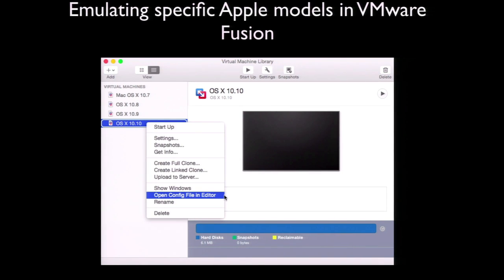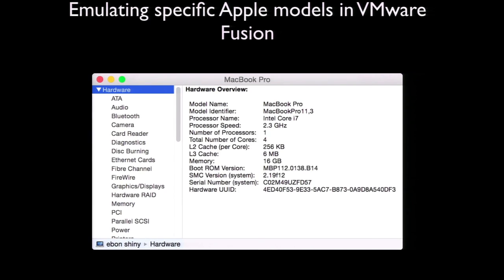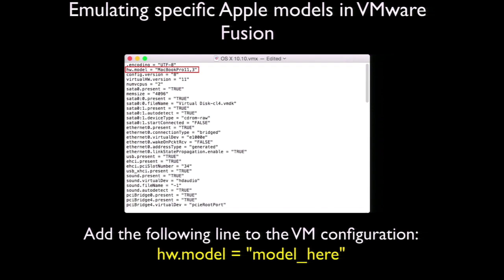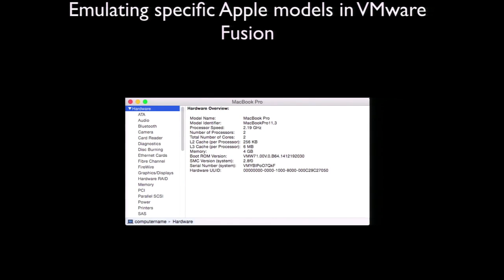Once you have a VM built, you may want to edit it to emulate a specific Mac model — for example, to test model-specific updates from Apple Software Update. The first step is to locate the model identifier of the Mac you want to emulate, which you can find in System Profiler on an appropriate Mac. To set your VM to report itself as a specific Mac model, you'll need to add the hardware model settings to your VM's configuration file. Select the VM, make sure it's not running, hold down the Option key, right-click on the virtual machine, select Open Config File in Editor, add a line like the one shown on screen substituting the actual model identifier, save your changes, and the next time you launch the VM it should identify itself as the specified Mac model.